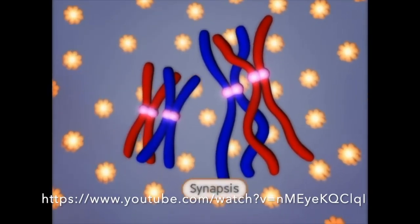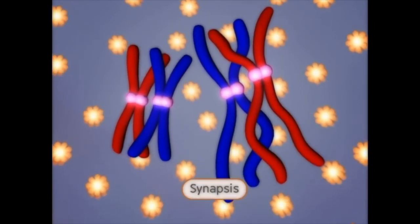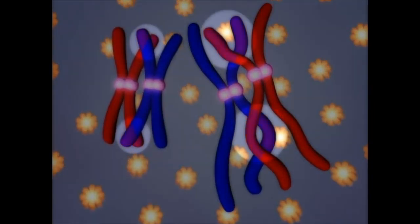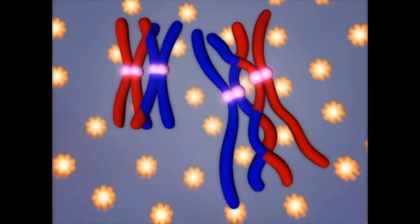In prophase 1, synapsis matches up homologous chromosomes to form tetrads, allowing crossing over to occur at the end of the chromosomes in the telomeres, resulting in recombination.